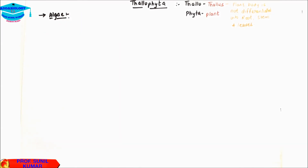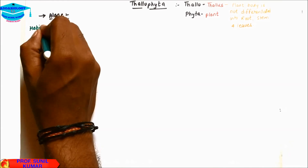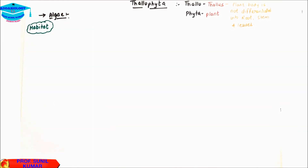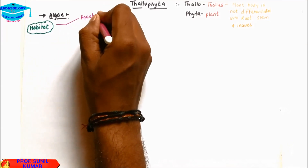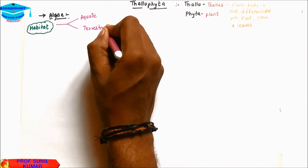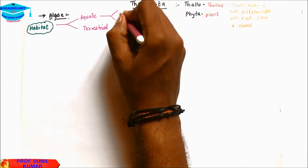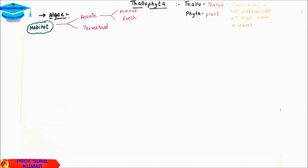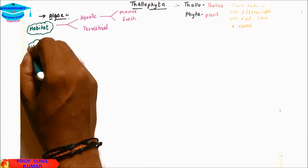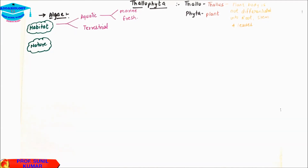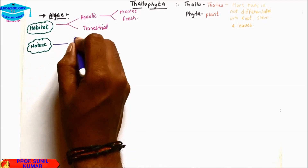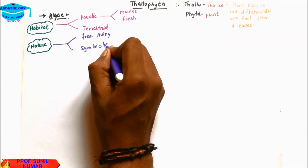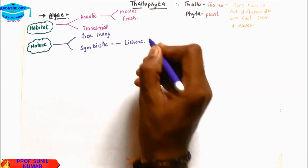First, the habitat of algae: they are aquatic and some are terrestrial. Aquatic includes two types — Marine or Freshwater. Terrestrial, we have only Lichen. With respect to nature, algae are either free-living or symbiotic. Lichens are symbiotic algae associated with fungus.